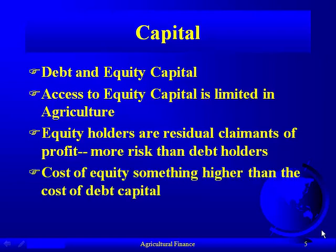So there's obviously more risk associated with equity. The cost of equity, then, we can think of as something higher than the cost of debt capital — because if you take on more risk, you have to be compensated for it. If you take on more risk by owning equity, you expect higher compensation. Thus it's going to cost you more to get somebody to give you equity than debt.